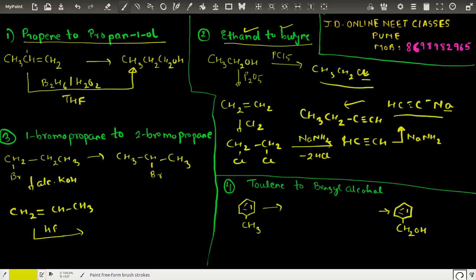So we can just put HBr. We don't have to put peroxide because we don't want the anti-Markovnikov, we want the Markovnikov addition. So clearly we end up getting what is asked in the question.